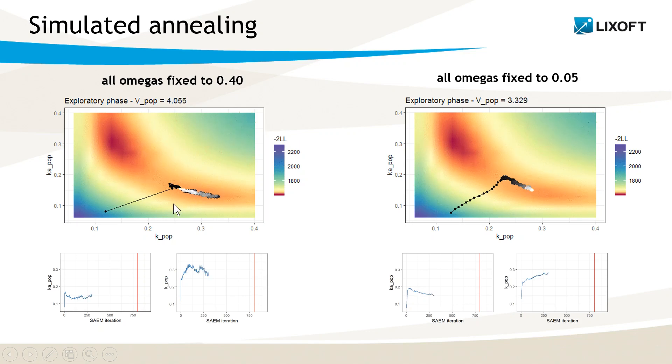What is very interesting in this example is that with large omegas the model first converges to the local maximum but is then able to escape it to find the global likelihood maximum. When the omegas are small, this is not the case because there is not enough noise to jump by chance out of the local maximum.